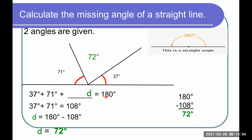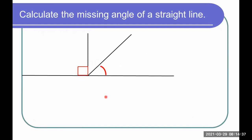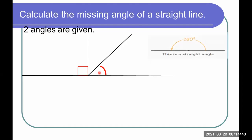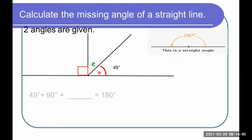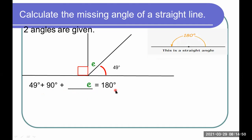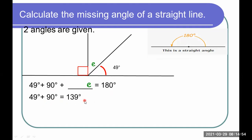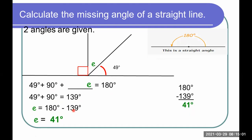Let's try one more. One angle forms 90 degrees while the other angle is 49 degrees. So we add: 49 plus 90 plus E equals 180. Therefore, 49 plus 90 is 139. Then subtract from 180, which gives 41 degrees. So angle E is 41 degrees.